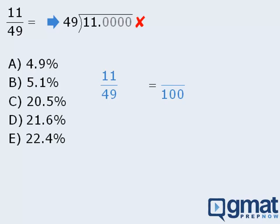To find equivalent fractions, we must multiply the numerator and denominator by the same number. So what number must we multiply 49 by to get 100? Well, if we multiply 49 by 2, we get 98, which is very close to 100.